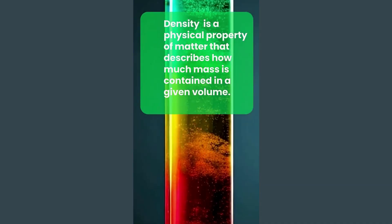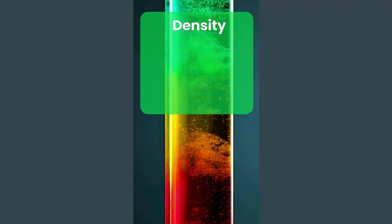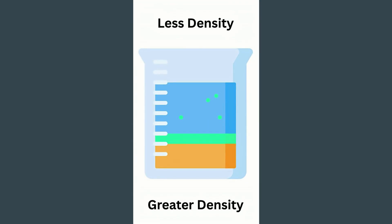This bowling ball is sinking because it has a greater density than water. But what is density? Density is a physical property that describes how much mass is in a given volume. The formula for density is mass divided by volume. It's the reason that hot air rises and these liquids that have different densities settle underneath and above one another.